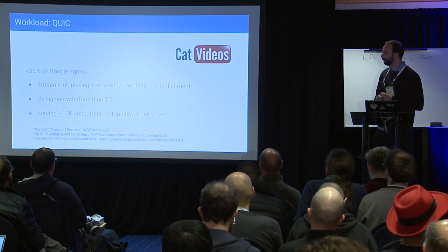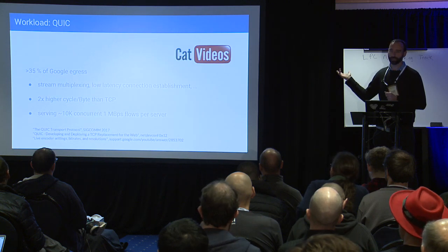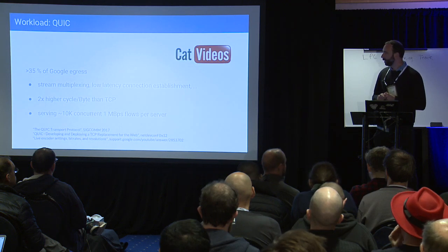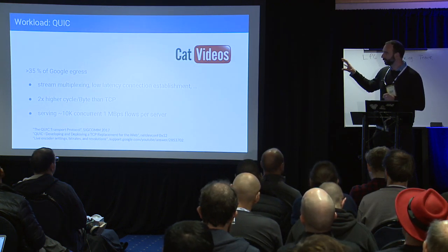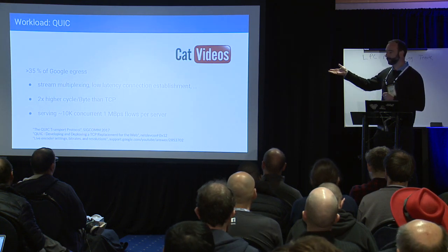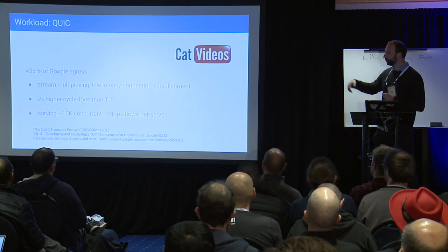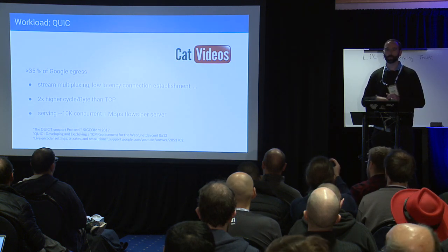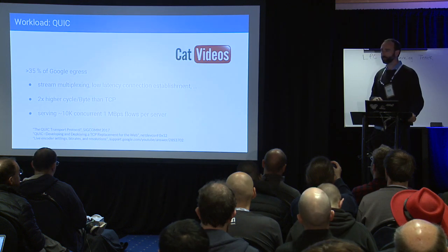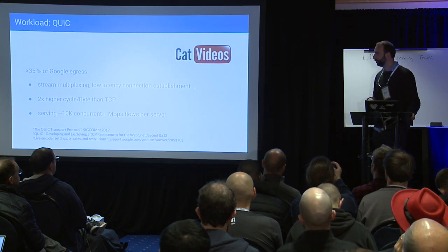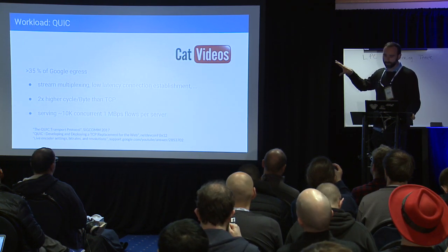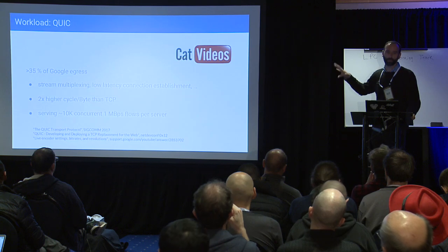That number is growing. The majority of Google egress, surprisingly, is YouTube traffic, so that's actually a pretty sizable fraction of the internet. Converting to QUIC gave some qualitative benefits, but it came with a pretty big cost — at some point a 3x, and more recently a 2x higher cycle cost per byte sent. When you have a cool new experimental protocol that's quite acceptable, but once you reach this scale, obviously it's not acceptable. So the impetus for this talk is: how can we reduce this cycle cost?